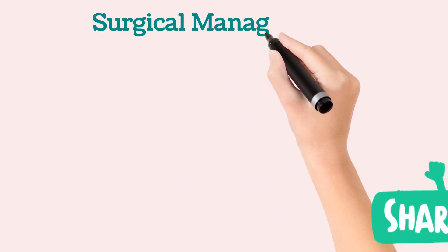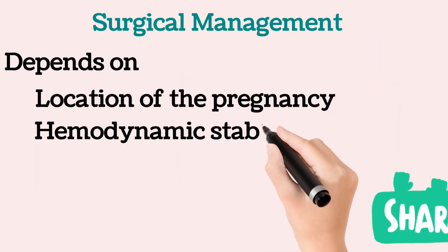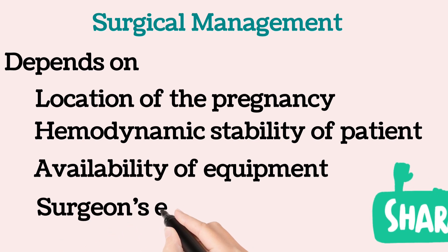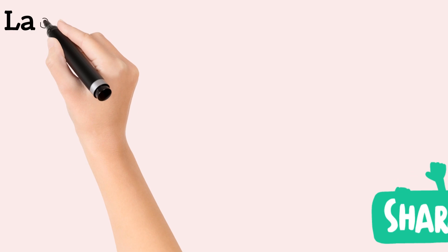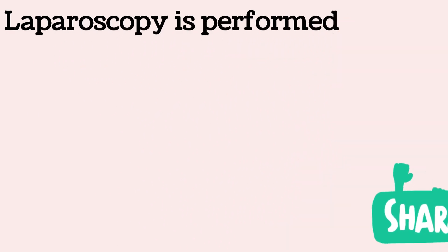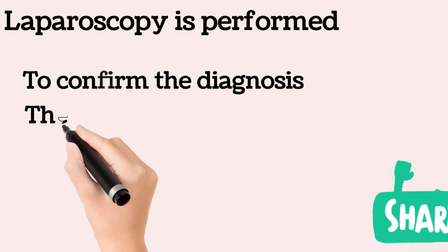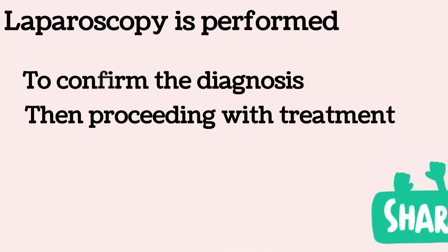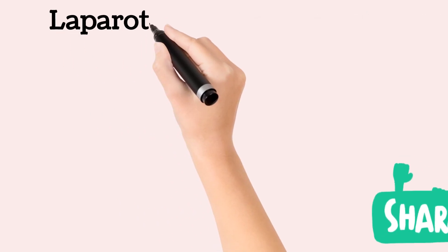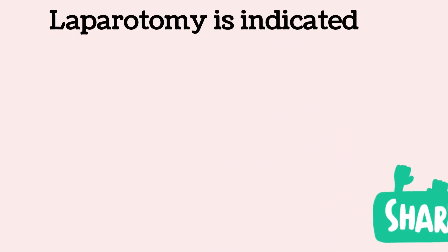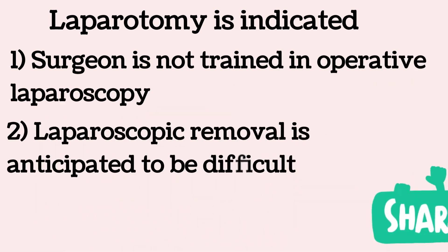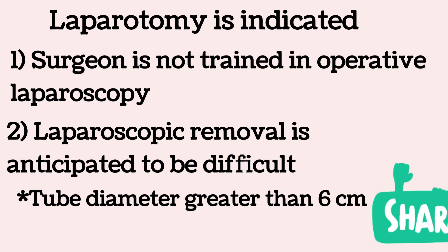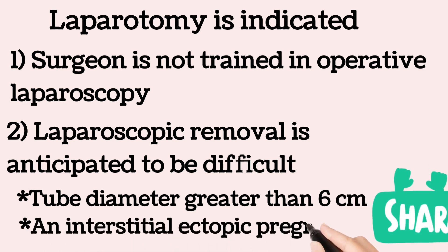Surgical management depends on the location of the pregnancy, the hemodynamic stability of the patient, and the availability of equipment and the surgeon's expertise. Laparoscopy is preferred to confirm the diagnosis and proceed with treatment. For tubal ectopic pregnancies, laparotomy is indicated if the surgeon is not trained in operative laparoscopy, if laparoscopic removal is anticipated to be difficult such as tube diameter greater than 6 cm or an interstitial location, or if there is uncontrolled bleeding.